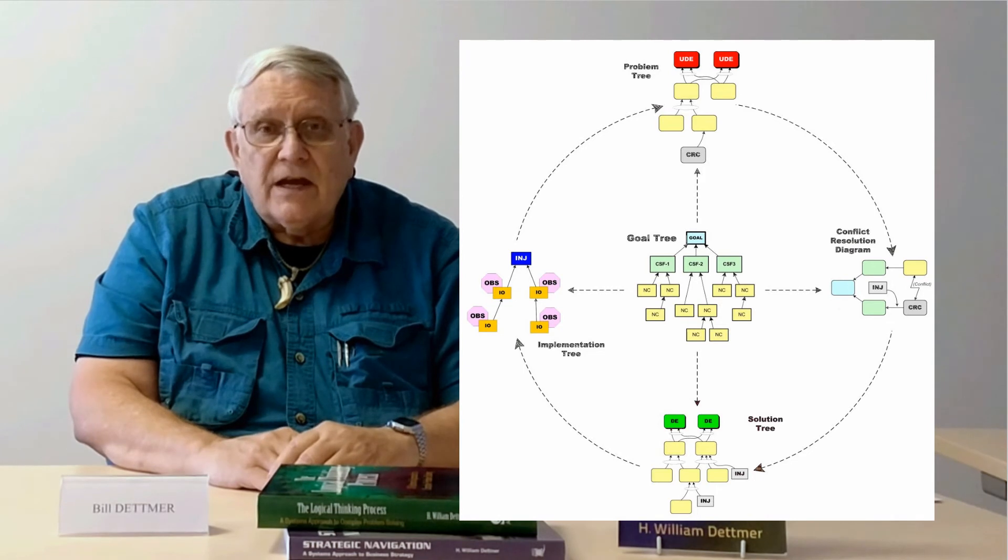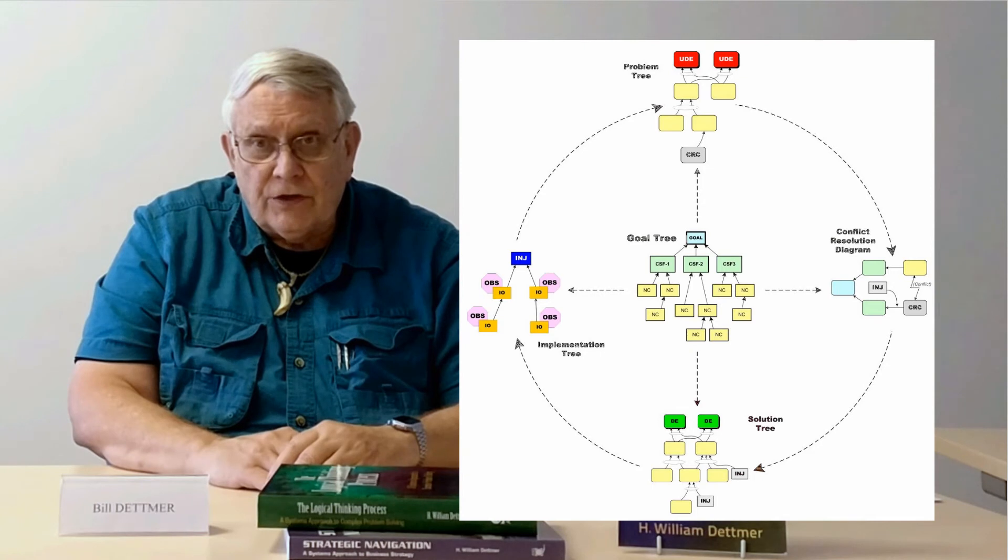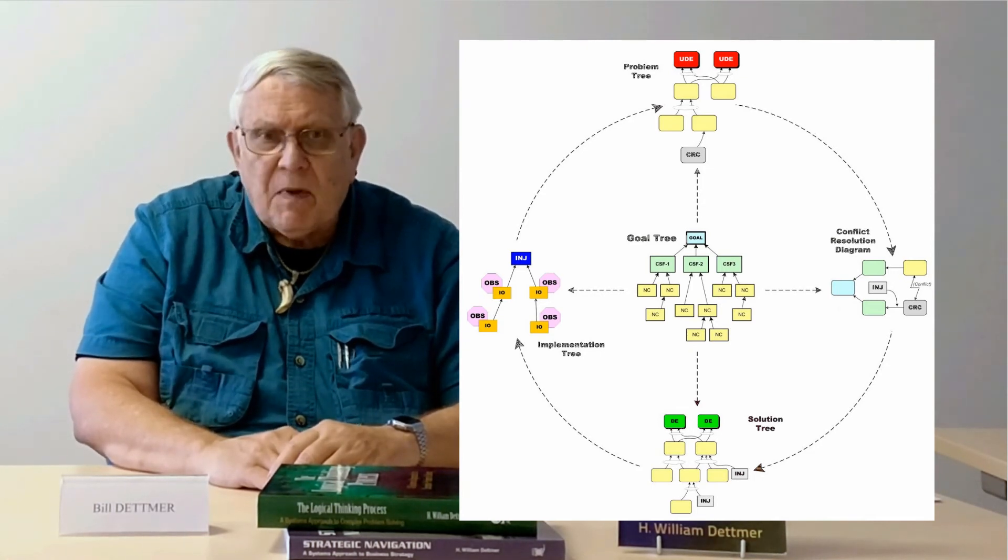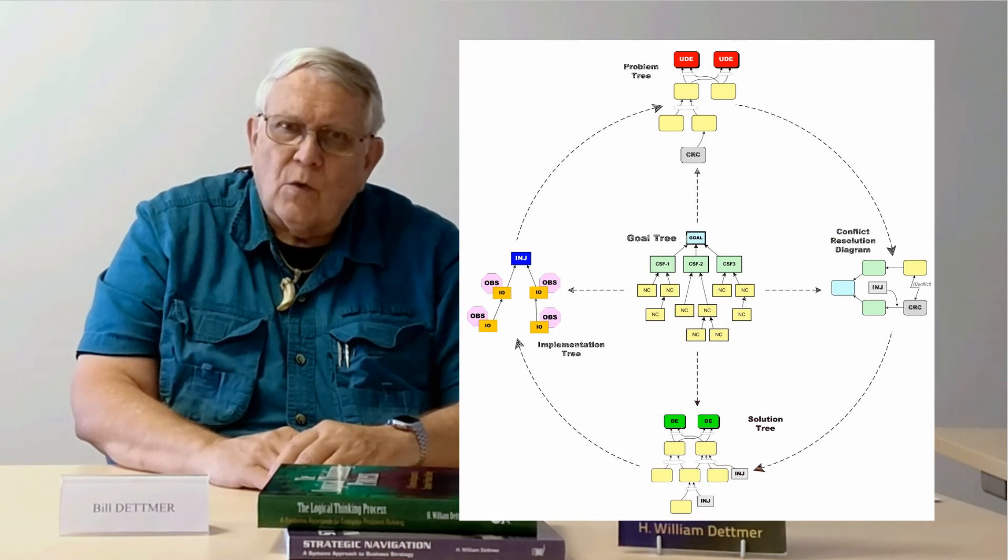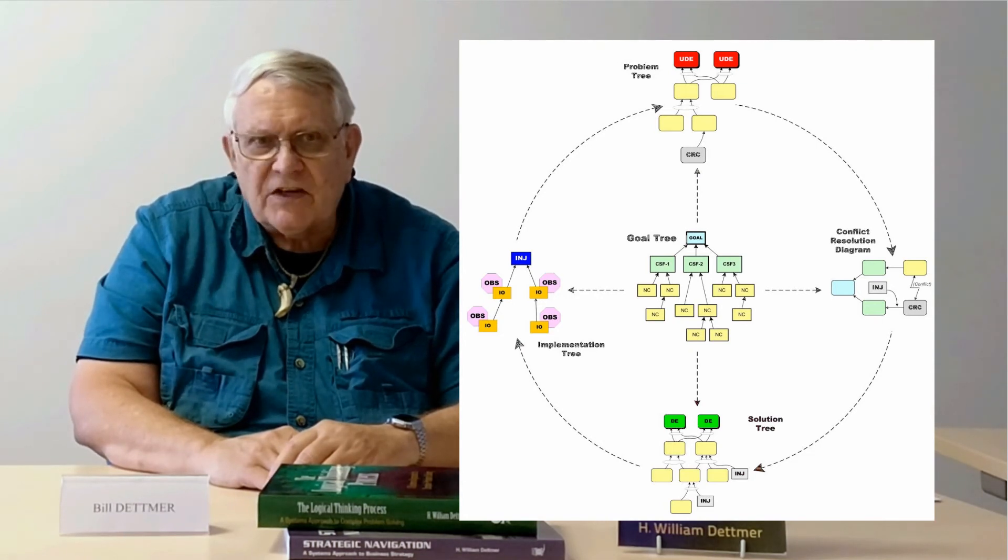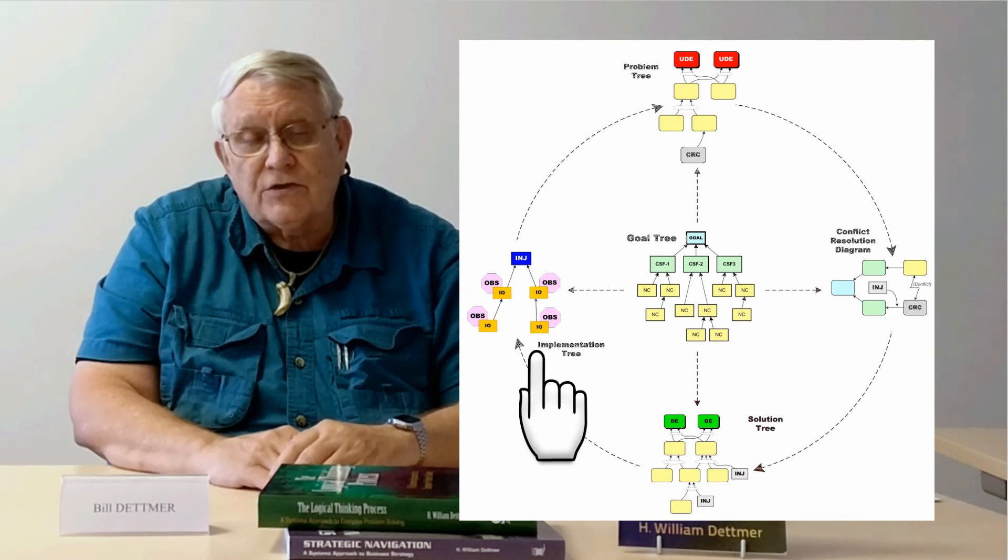Once the idea is verified as a workable solution with a future reality tree, we proceed to the final step: execution planning. In other words, what has to happen and in what order to put our solution into effect as soon as possible. The tool that we use for this is called a prerequisite tree.